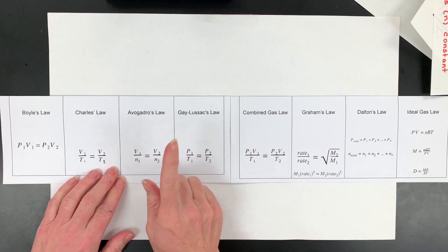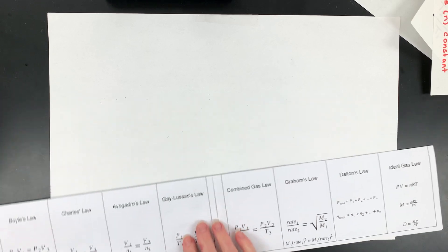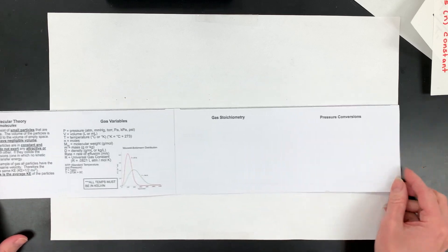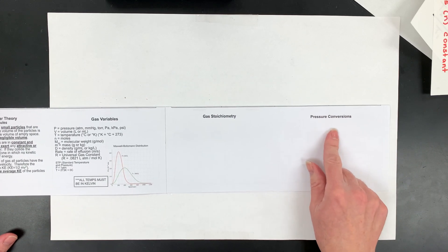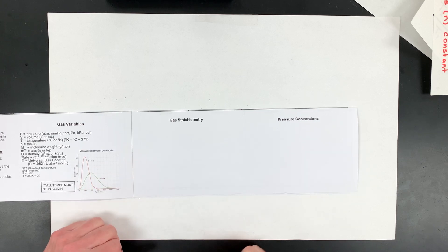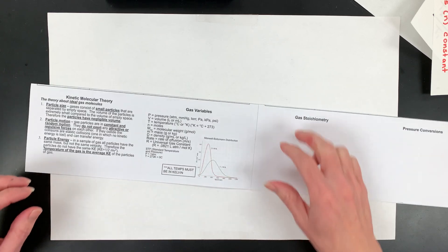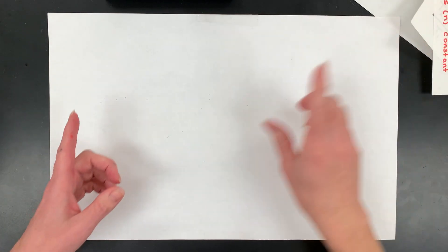I do hope to make an Avogadro, Gay-Lussac, combined, and Dalton's videos at some point. On the back, there's even room for gastoichiometry. And I did do a video on pressure conversion. So hopefully right here, you can use that video to write down how to convert with your pressure units. We didn't have that in this question, but we did with Boyle's Law. All right. Good luck, chemists. And I hope you watch another video that I made for you.